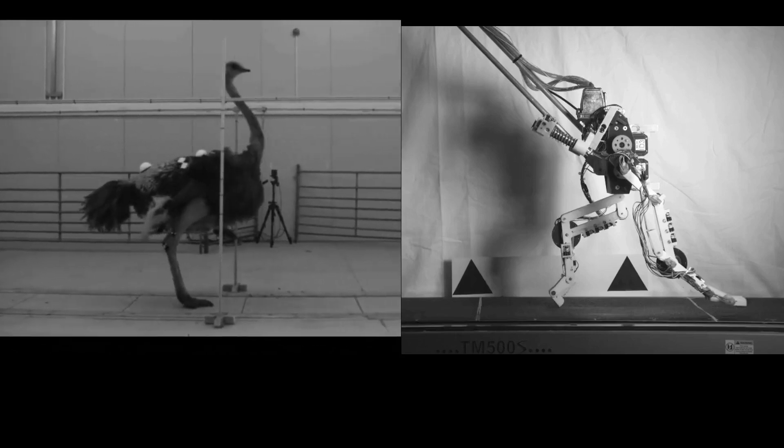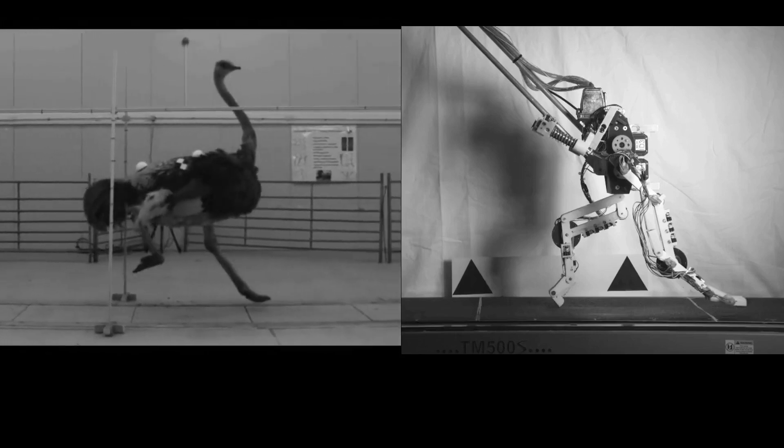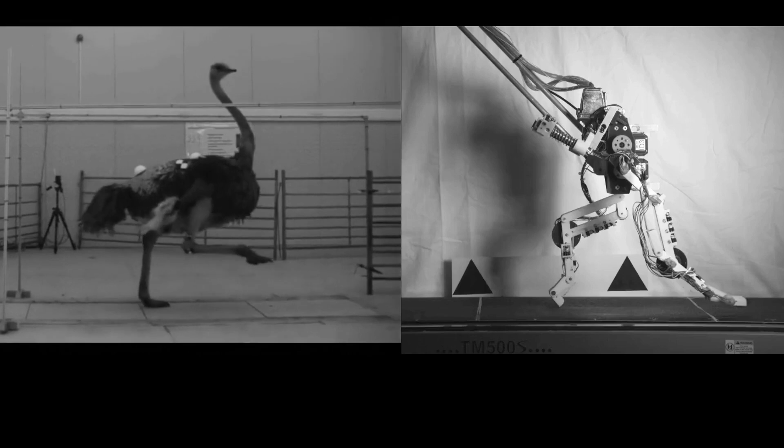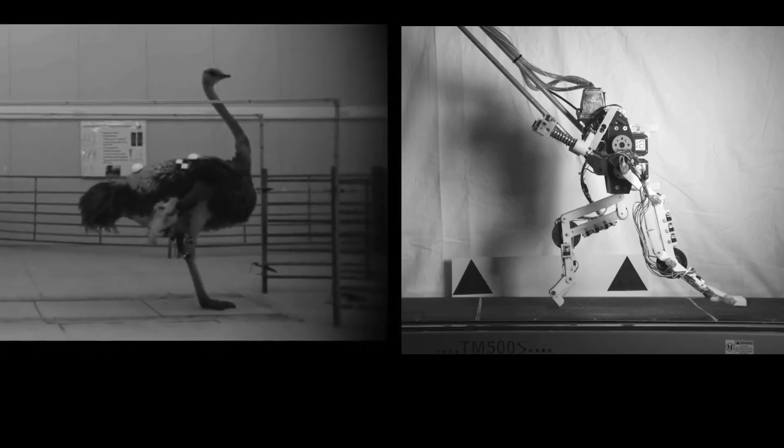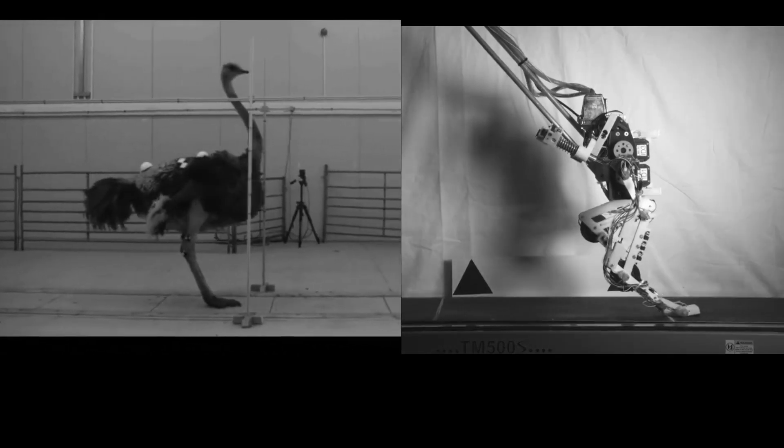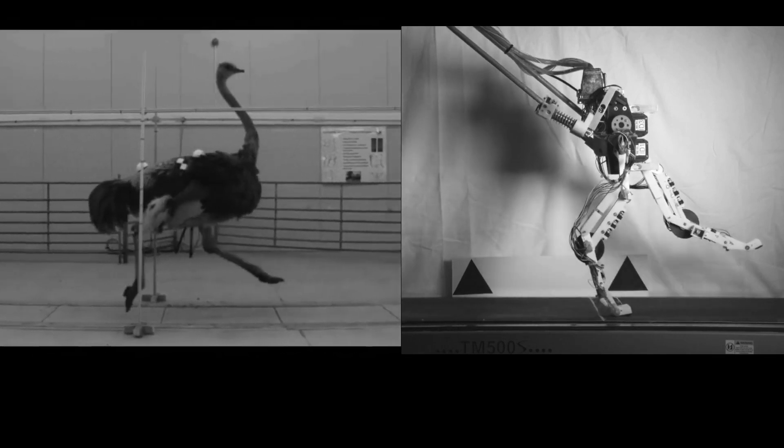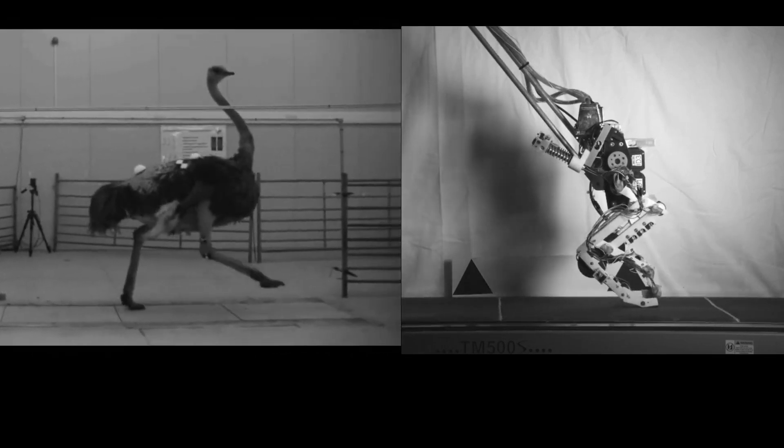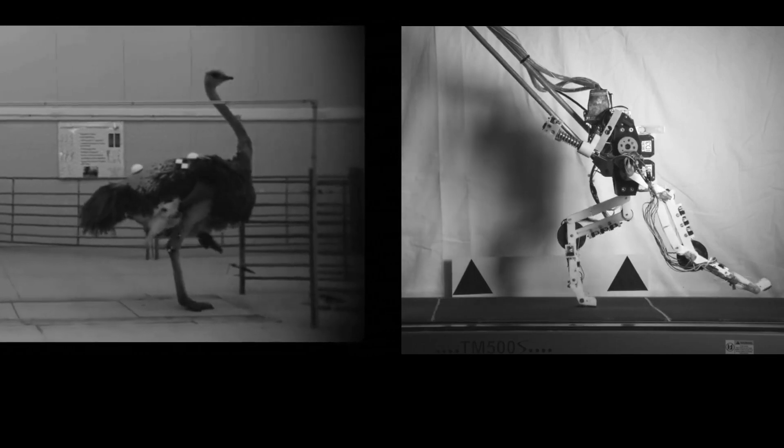Birds like emus and ostriches are excellent runners. Their speed and efficiency are enabled by well-developed multi-joint elastic mechanisms in the lower leg. BirdBot has been developed for economical running with simple control by emulating multi-joint elastic coupling.